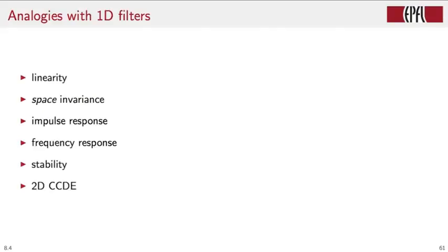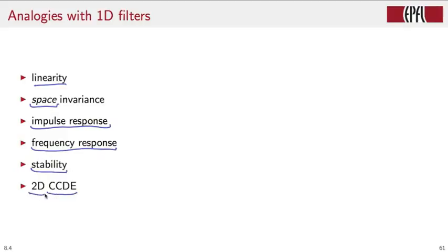A good starting point to define the filtering operation in the space of digital images is to extend the concept of 1D filtering to two dimensions. The ideas that admit a natural extension to 2D are linearity, the concept of invariance — which in the case of images becomes space invariance rather than time invariance — the concept of impulse response and its transform, the frequency response, the concept of stability, and the concept of constant coefficient difference equations, which in this case will be two-dimensional. With these ingredients, we already have a fully functional filtering paradigm for 2D signals.